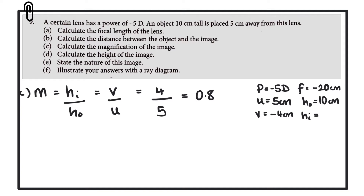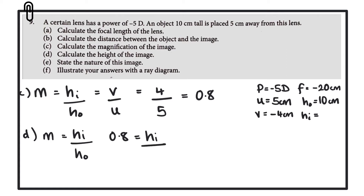Part D: calculate the height of the image. Now we can use the equation we had initially written out for Part C, which is that the magnification is equal to the height of the image divided by the height of the object. So the magnification is 0.8, equal to HI divided by the height of the object which was 10 centimeters. Therefore the height of the image is going to be 0.8 multiplied by 10, which gives us an answer of 8 centimeters.